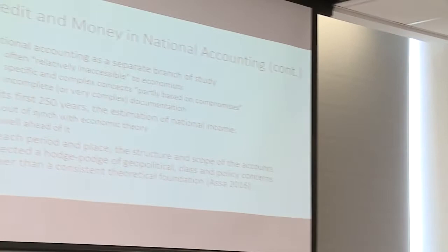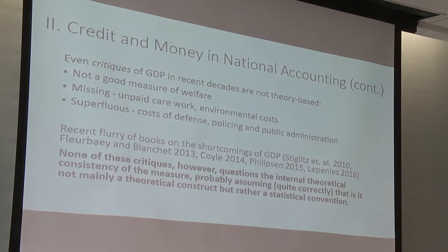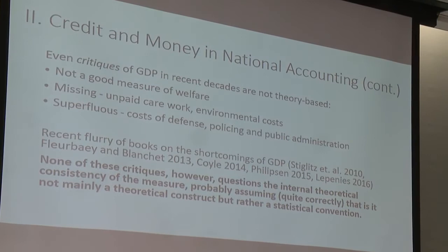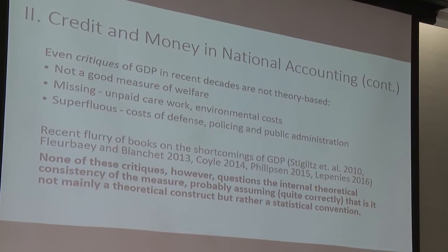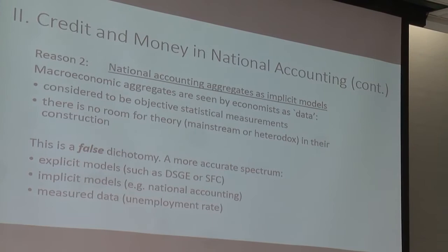National accounting is a separate branch outsourced to official statisticians. They don't teach it in schools anymore. Even critiques of GDP don't go into the theoretical issues — they say it doesn't include welfare and so forth. Most people think GDP and other macro indicators are data — 'datum,' given to us. But I argue this is a false dichotomy: it's more like a spectrum from real data like the unemployment rate, to implicit models like national accounting with its accounting identities, to full-fledged models like DSGE or CGE with behavioral equations.